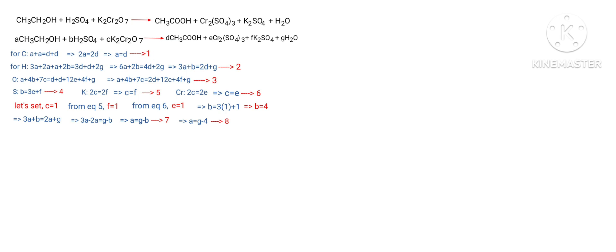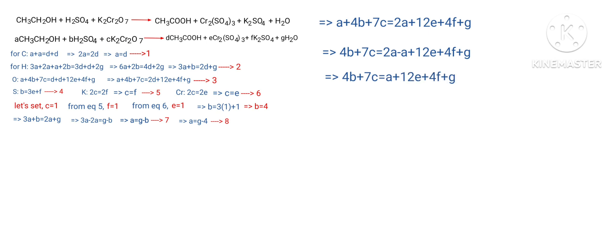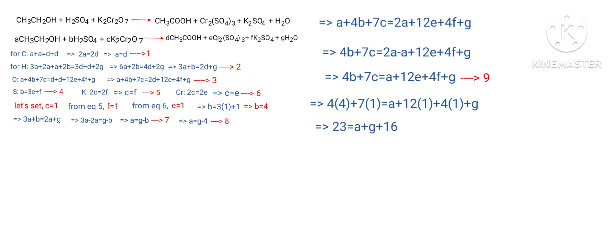From Equation 1, A equals D, so substitute D equals A into the Oxygen Equation 3: A plus 4B plus 7C equals 2A plus 2E plus 4F plus G. Simplifying: 4B plus 7C equals A plus 2E plus 4F plus G. Substituting B equals 4, C equals 1, E equals 1, F equals 1: 16 plus 7 equals A plus 2 plus 4 plus G, giving A plus G equals 7. (Equation 10)